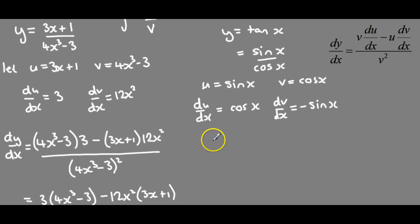Right then, let's put that all together in our quotient rule. dy/dx equals, so we have v times the derivative of u. So cos x times cos x is cos squared.